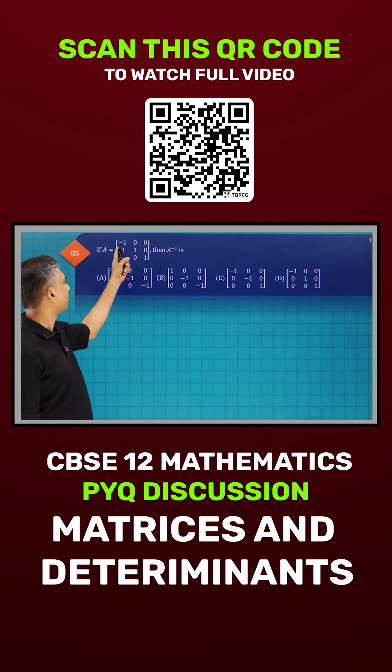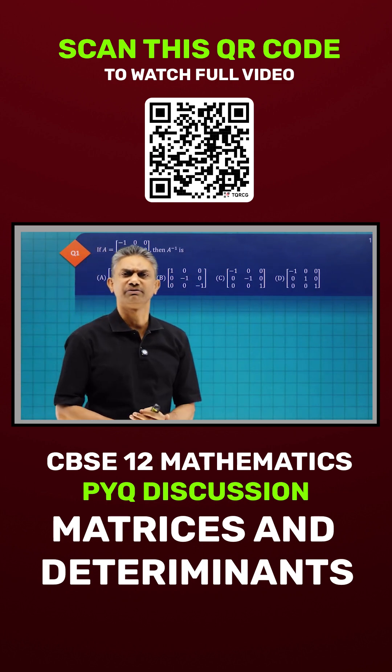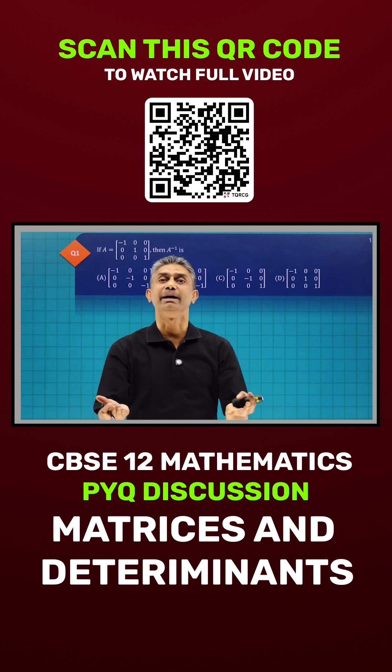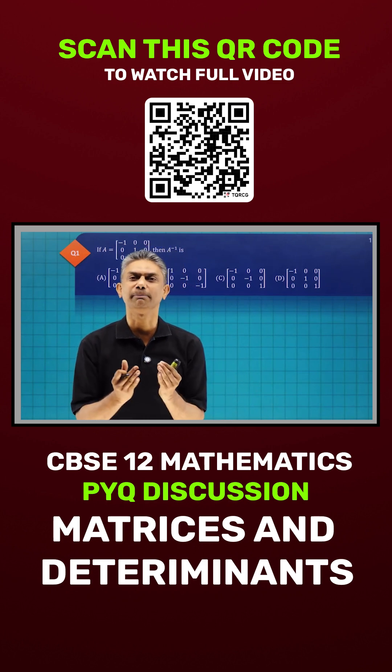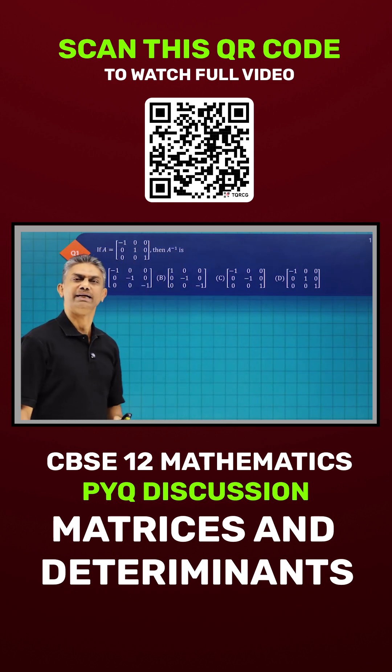If A is equal to a matrix, then A inverse. What do you mean by inverse of a matrix? A inverse is another matrix. If you multiply both of them, you will be getting the unit matrix.